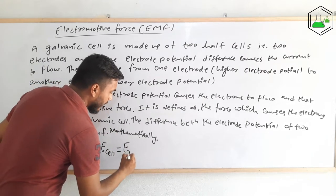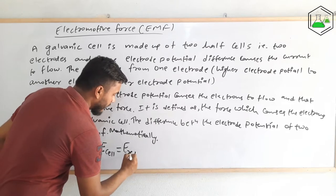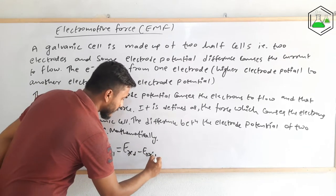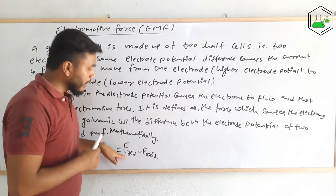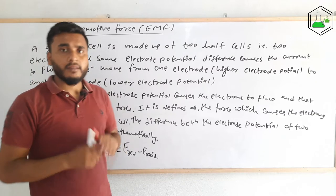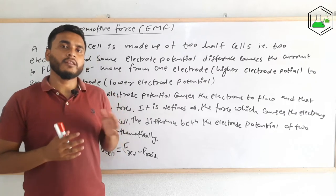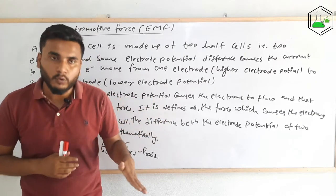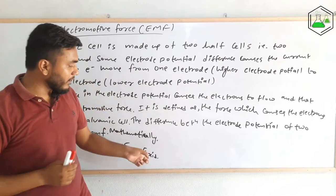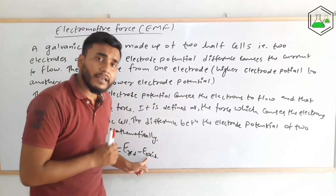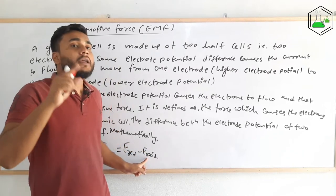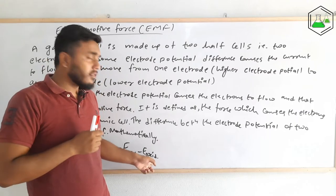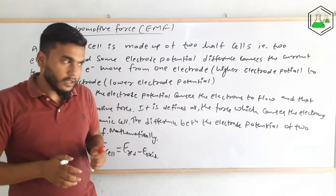The formula is: E_cell = E_reduction − E_oxidation. E_reduction refers to the electrode potential of the reduction half, also called the cathode, and E_oxidation refers to the electrode potential of the oxidation half, also called the anode.